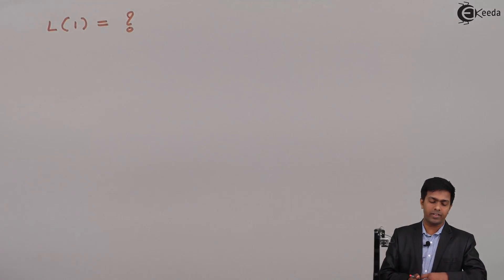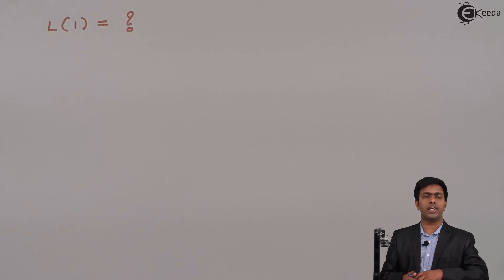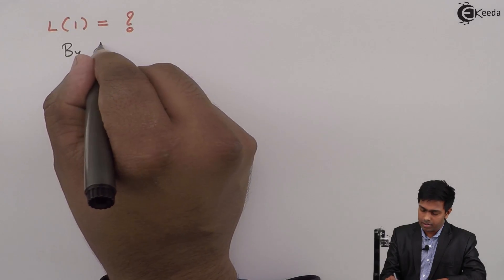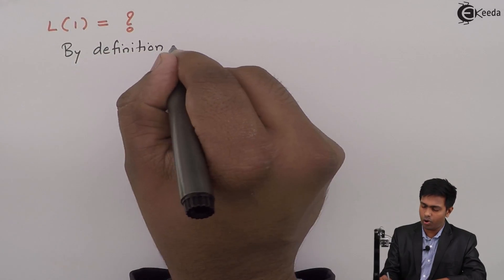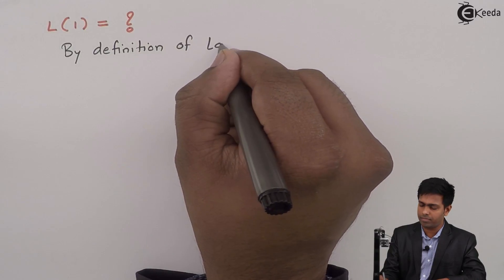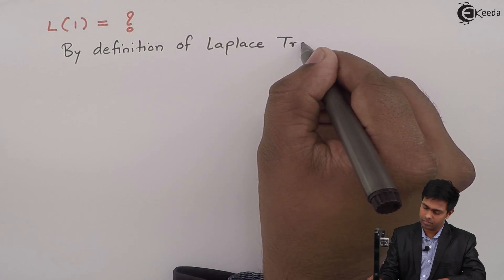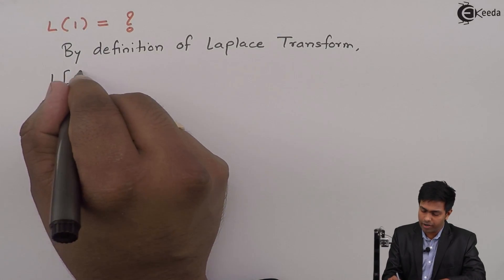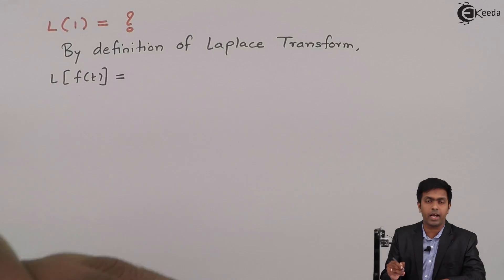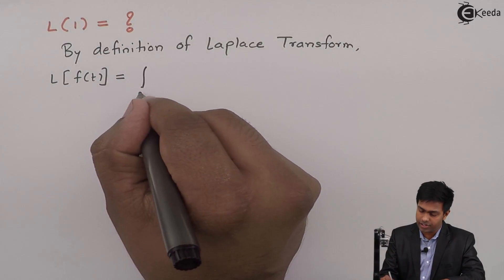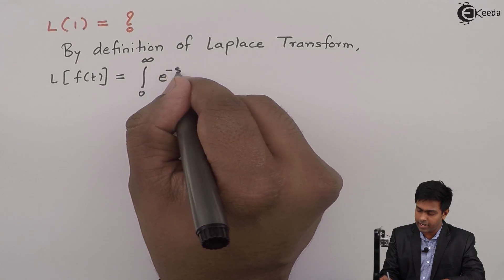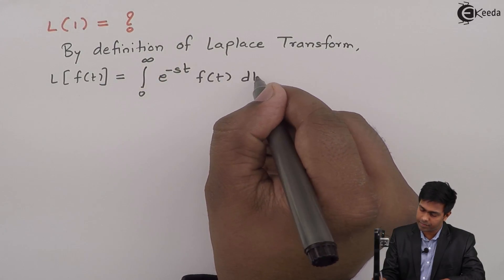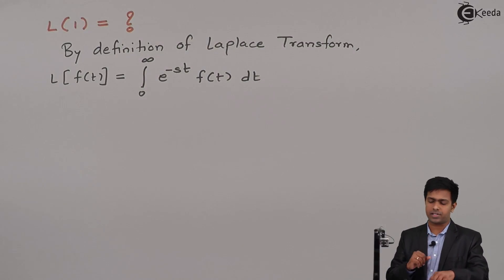To derive this relation, I will first write the definition of Laplace transform. By the definition of Laplace transform, we know that the Laplace transform of f(t) is given by the formula: integration from 0 to infinity of e raised to minus st, times f(t), dt. This is the definition of Laplace transform.